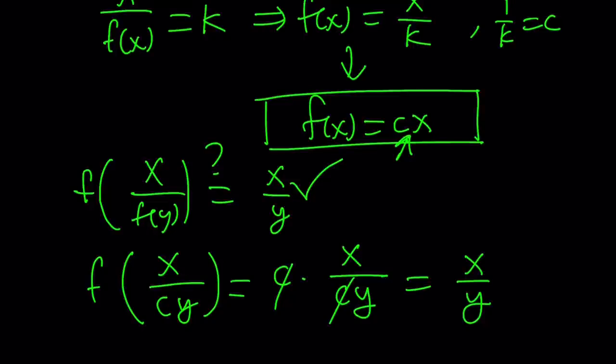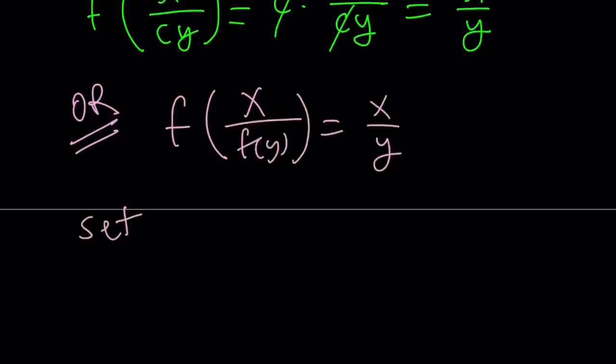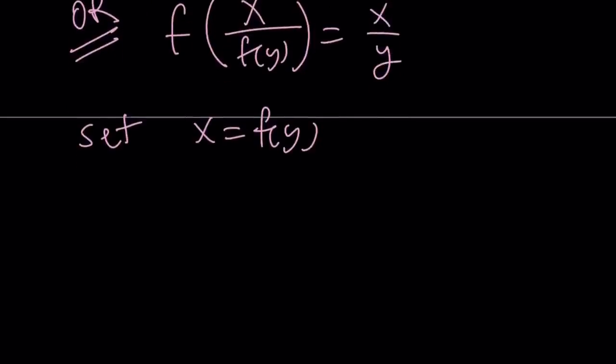Or you can do the following. Let's take a look at it from another perspective, because there is more than one perspective here, obviously. So let's go ahead and rewrite our equation. We have f of x over f of y equals x over y. Let's set x equal to f of y. Since x and y are free variables, I can pretty much set x anything I want, as long as they're not 0.